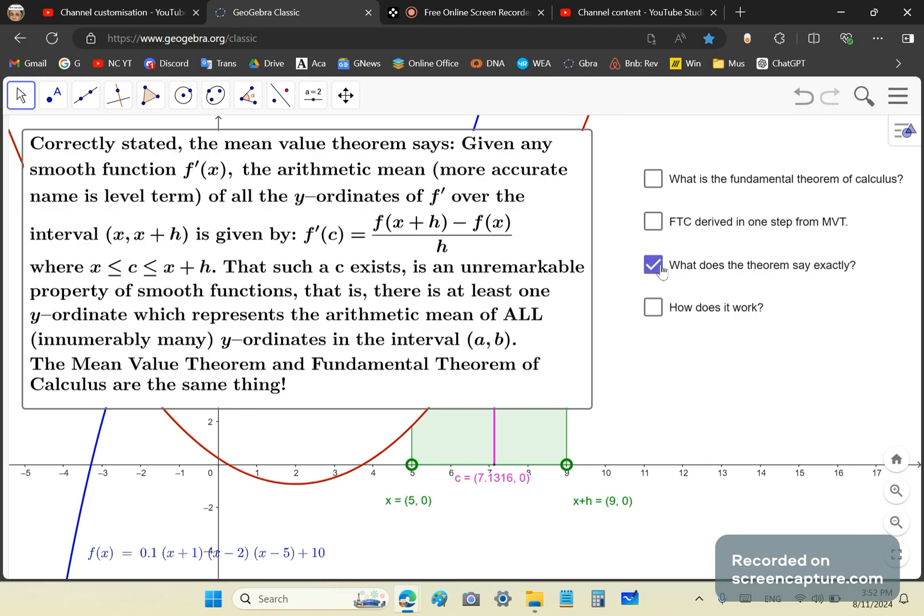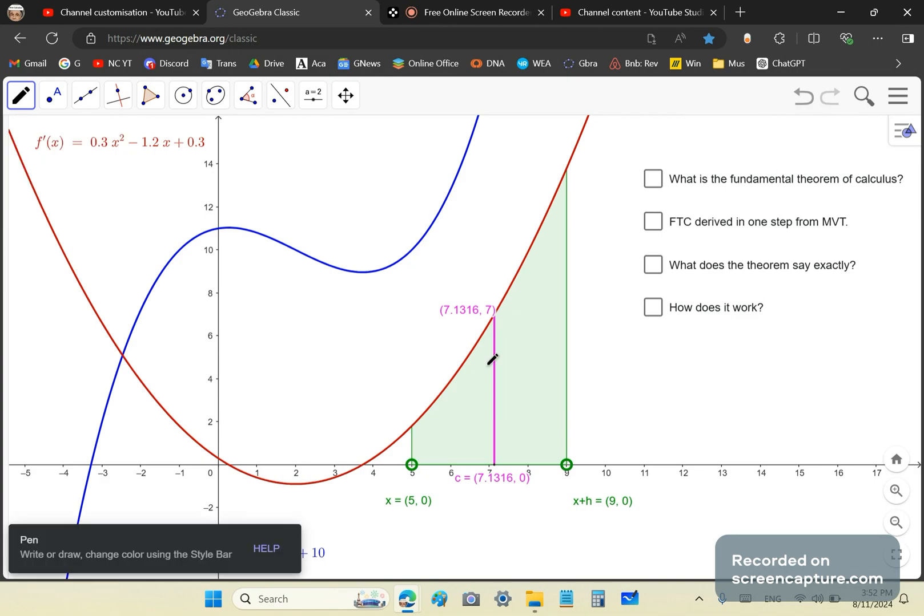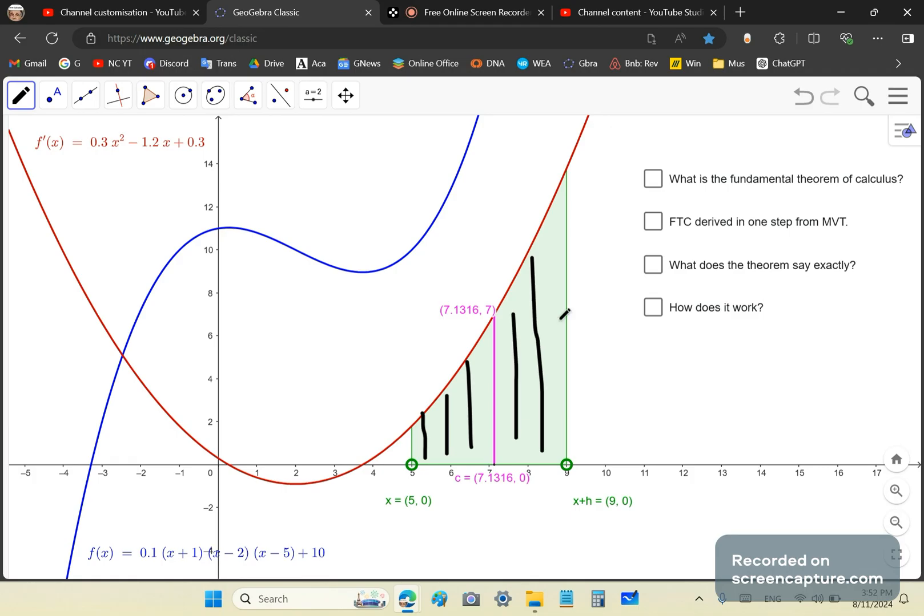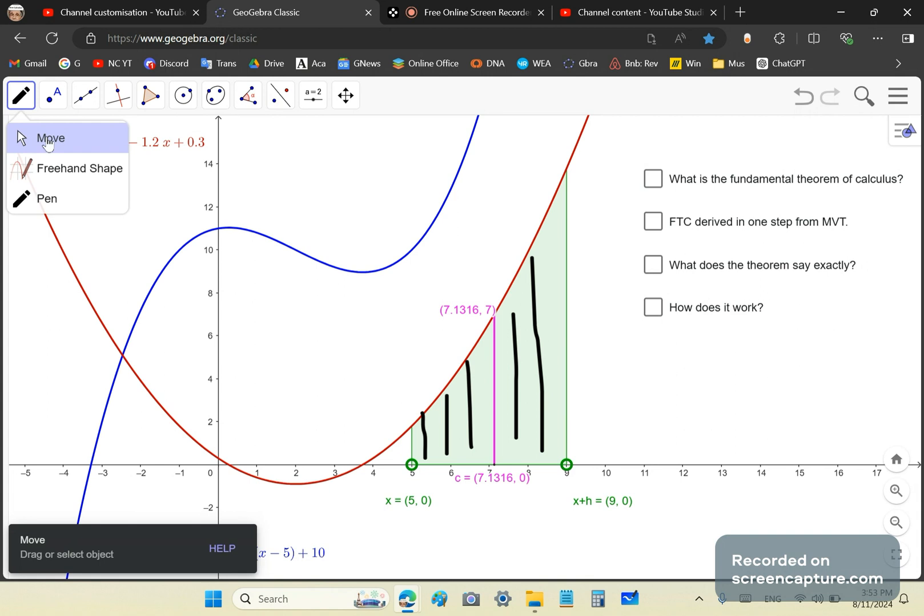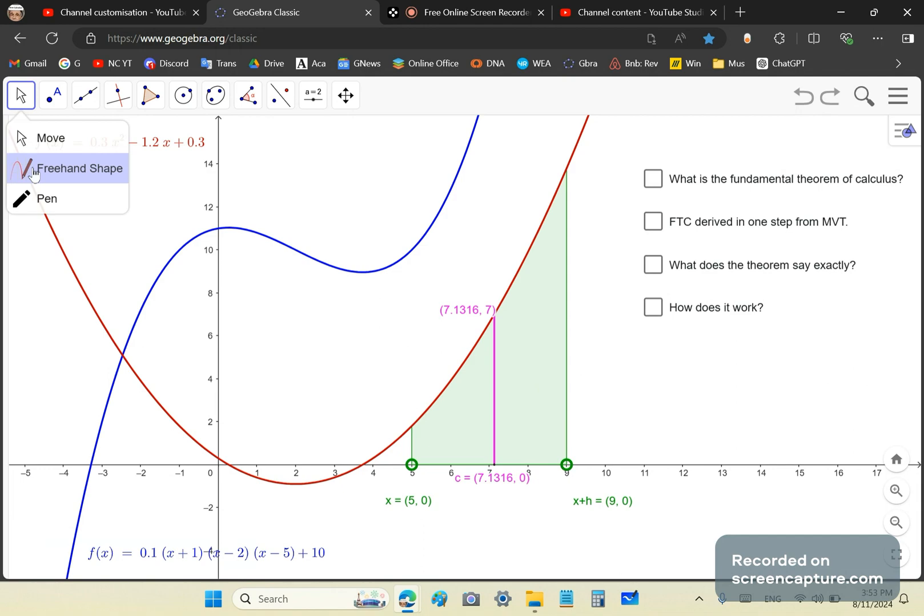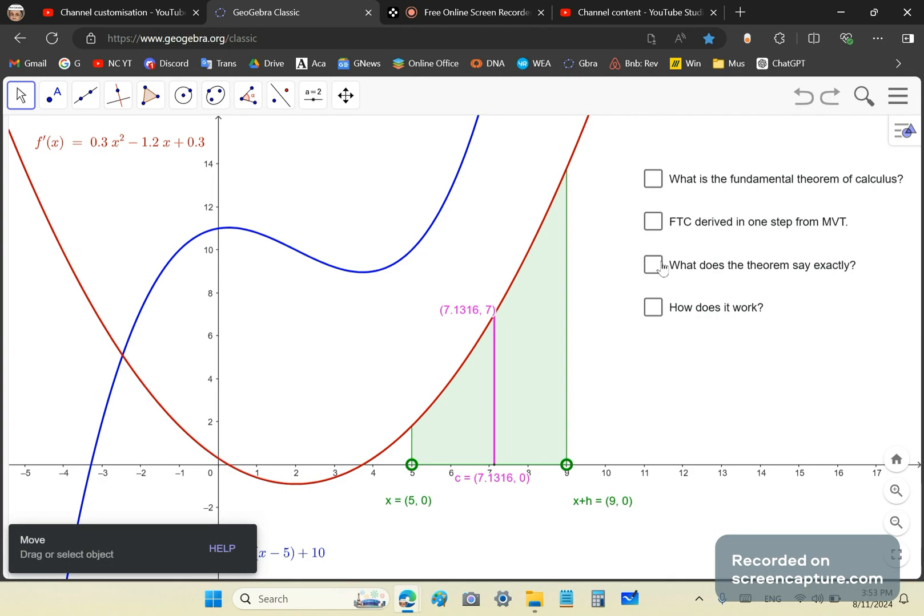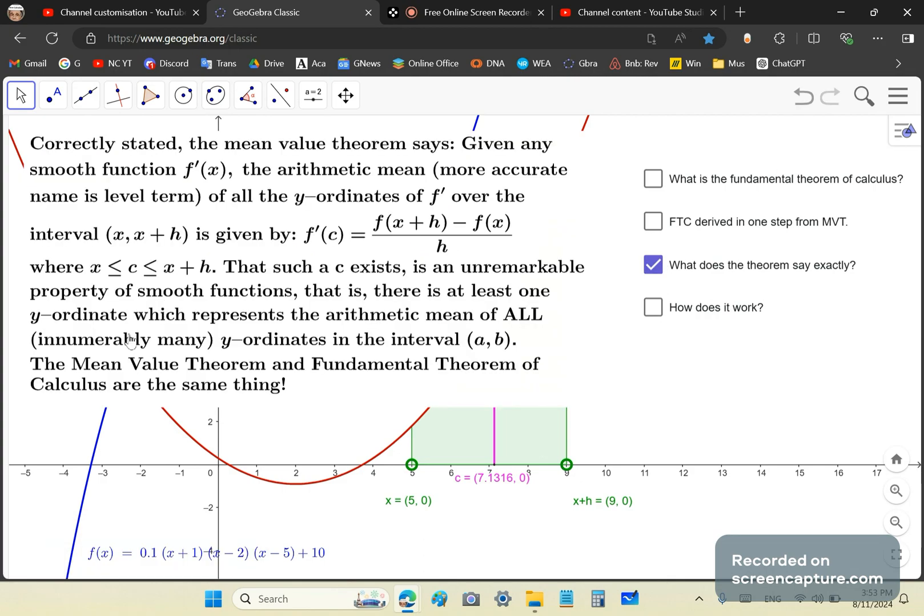So what does that mean? It means that if you were to sum all the y values in the green section and take their arithmetic mean, you'll get this magenta line. And then once you get the magenta line, you can multiply it by the interval width, which is 9 minus 5, which is 4. And if you multiply it by the interval width, you get the area.